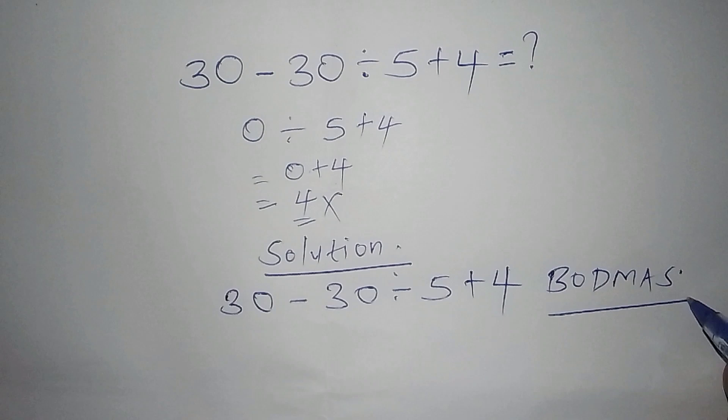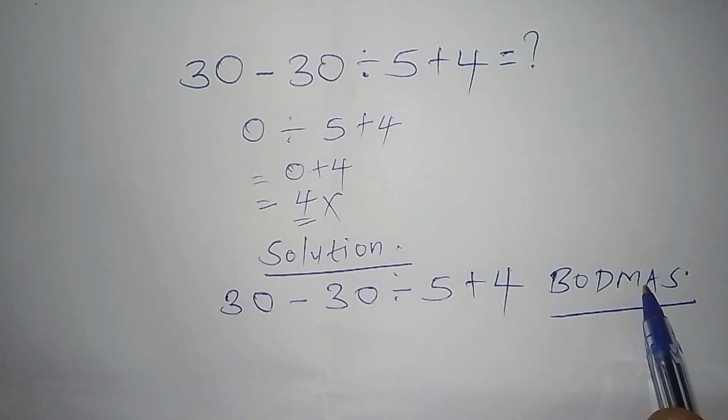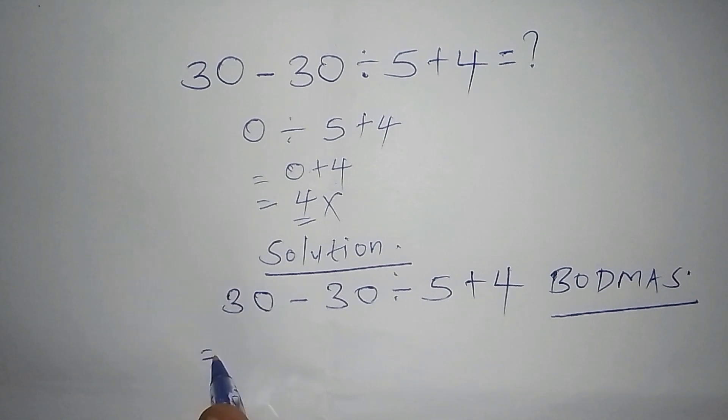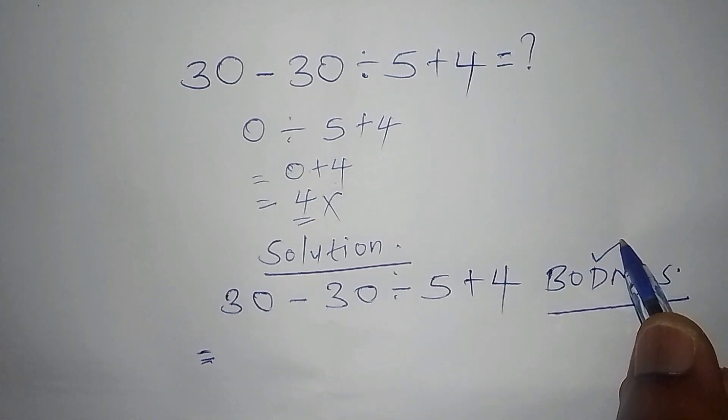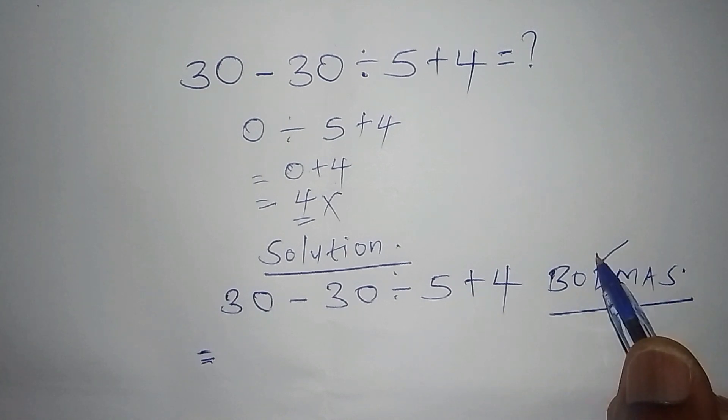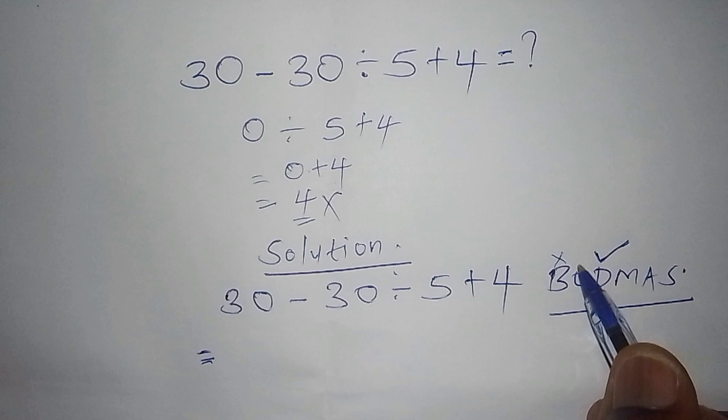So once we are able to work it out correctly, once we follow this procedure, our first step shall be we are going to check the D. D stands for the division sign. So the reason as to why I am jumping towards this point, because we do not have the bracket, and we do not have the of.